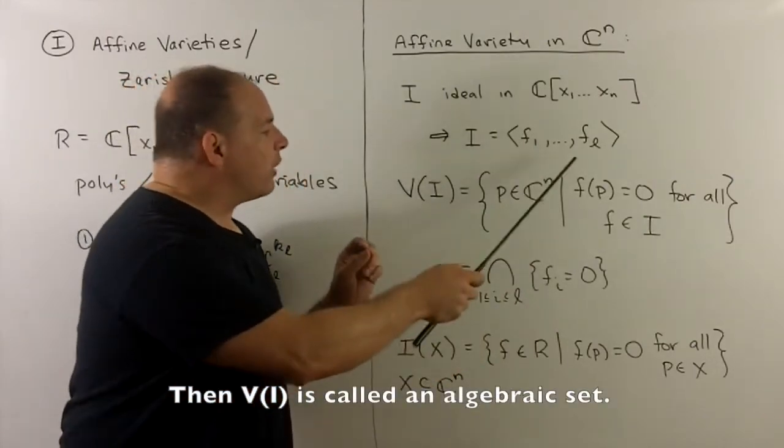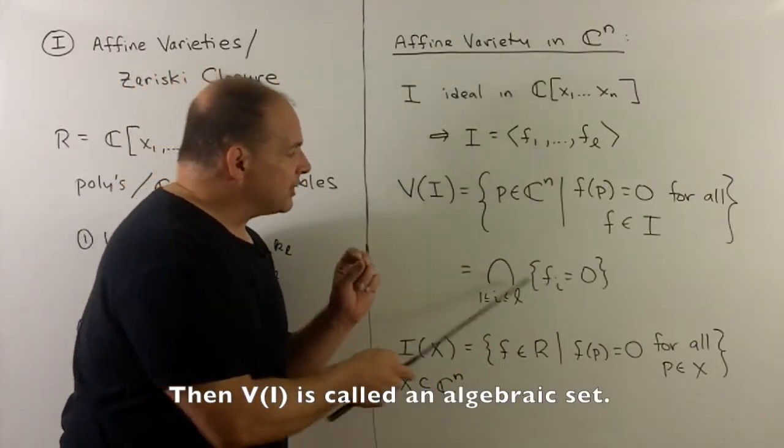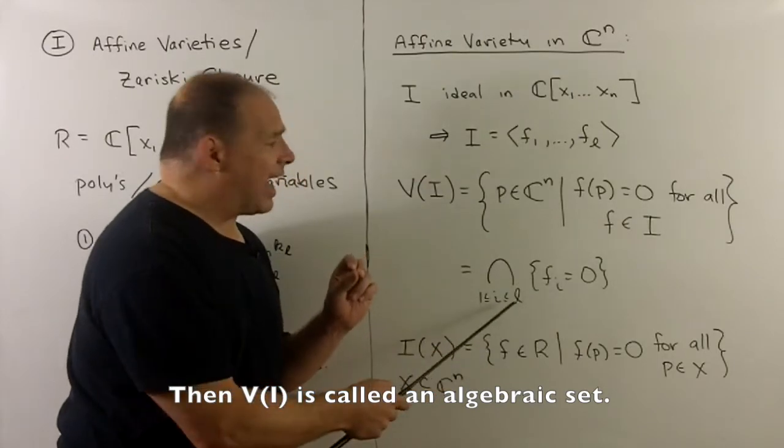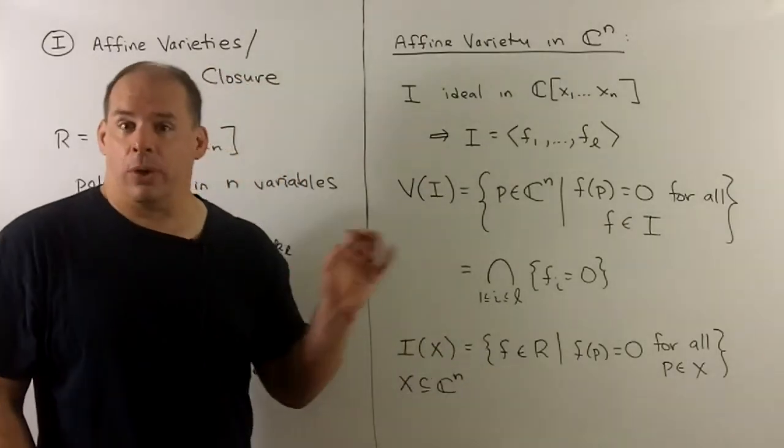Note, because this is finitely generated, we can just take the zero set for each F sub I, I between 1 and L, and then take the intersection of those sets.